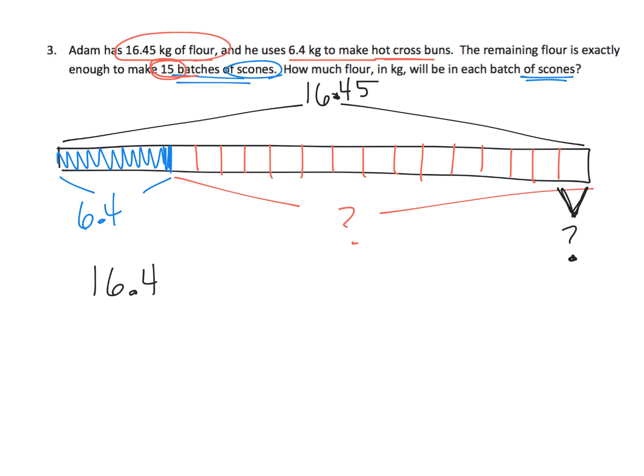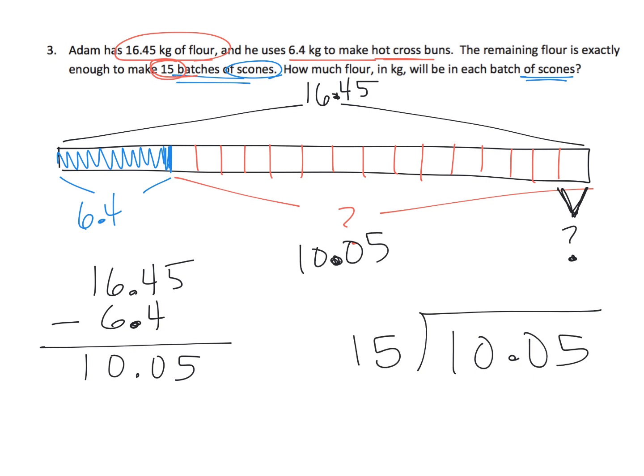So what's our steps? Well first we're going to take 16.45 and we're going to subtract 6.4. So we're lining up the decimal and I could do this part real quick. So this huge section right here is equal to 10.05. And then because we want to know how much is one of those 15 sections, this is going to be the division problem that we do. And I'm going to leave that up to you parents and teachers to help your students with that one.